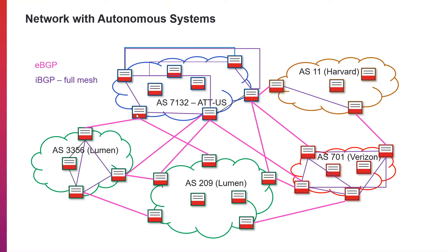EBGP, external BGP, connects border routers in separate ASs together. What a border router wants to do is advertise the routes internal to its autonomous system out into the world so that its nodes can be reached. It also takes all the information it learns about other routes in the world and tells its internal routers about them, so they can reach beyond this network. The border router advertises those routes into the network and makes itself the next hop.